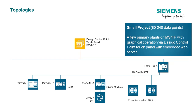When needed, room automation can also be integrated over BACnet MSTP. The complete system can be monitored and graphically operated by the DSEGO control point with embedded web server.